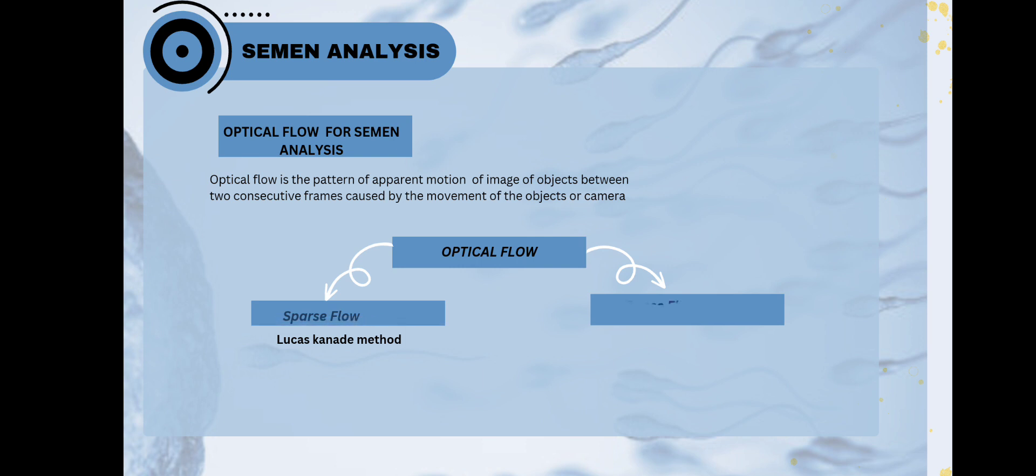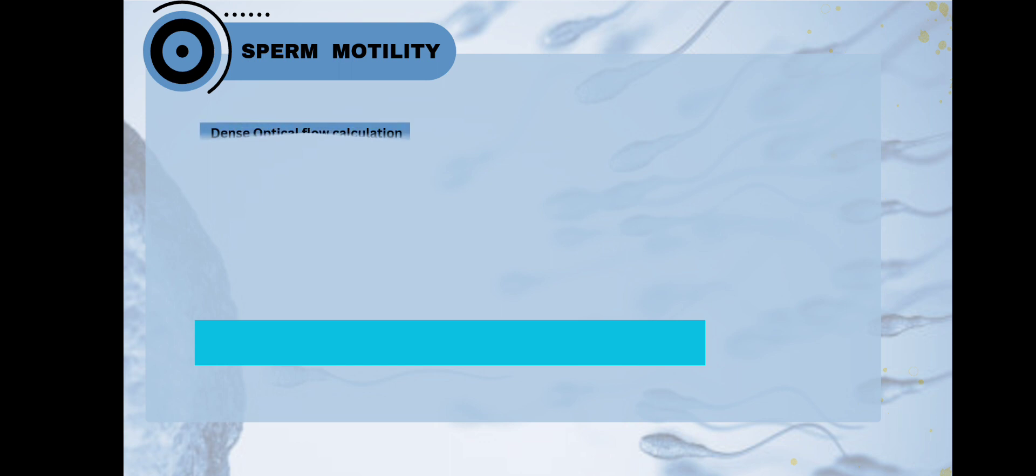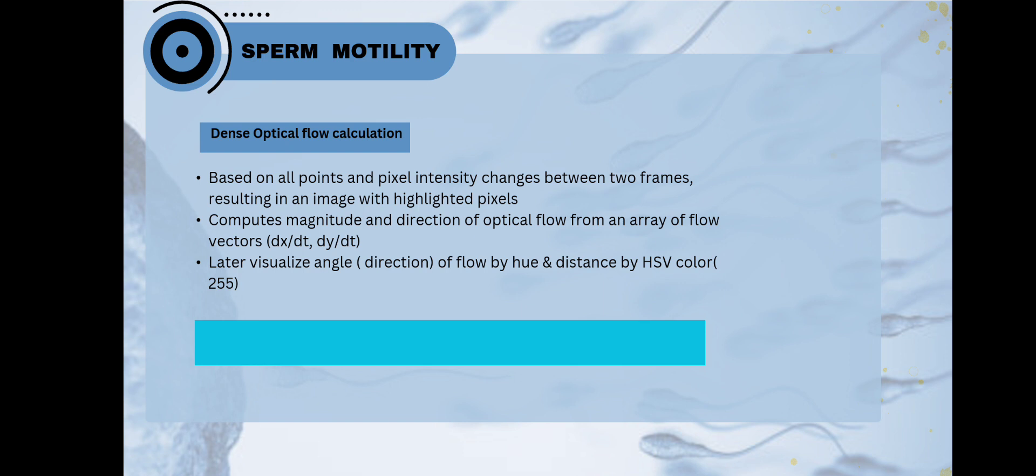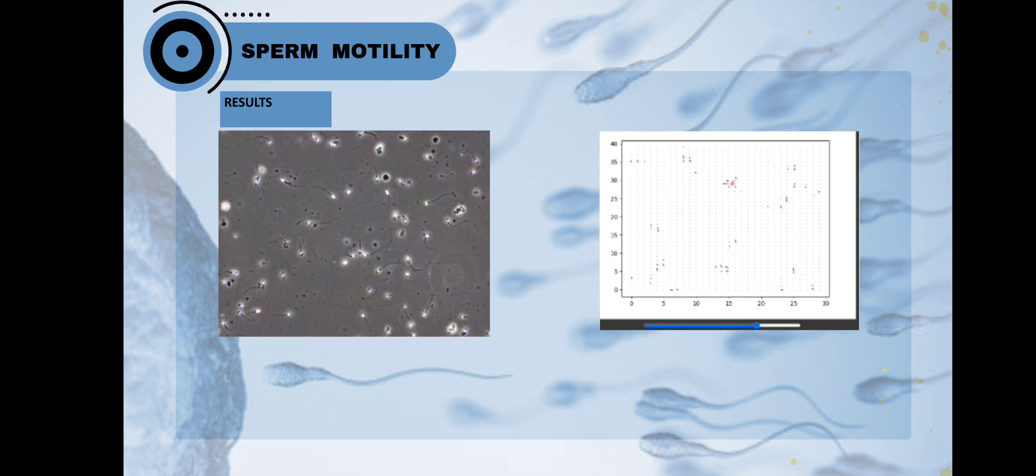We have two different methods: sparse flow and dense flow. Sparse flow gives us the corner views, but dense flow gives us the presentation of each pixel of the image. So, we are using the dense flow method. In dense flow, we are using the Gunnar framework method used for optical flow analysis. In this method, we determine the pixel values at every point and compute the magnitude and direction. After that, we can visualize this in the HSV scale which separates the images from the illumination.